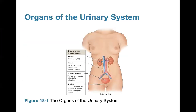The organs of the urinary system include the kidneys, which are the organs that actually produce the urine; the ureter, which transports urine towards the urinary bladder; the urinary bladder, which acts as a temporary storage unit for urine before urination; and the urethra, which conducts urine to the exterior. In males, it also helps in the transport of semen.